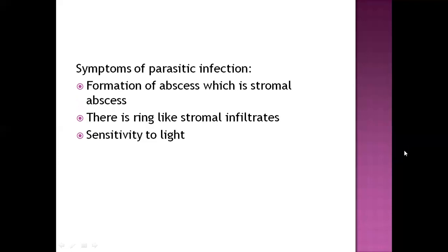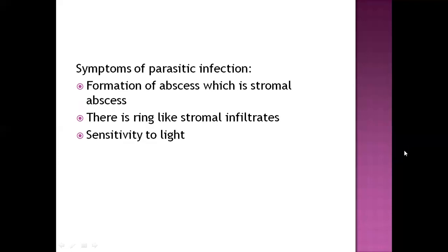Symptoms of parasitic keratitis: first, formation of a stromal abscess — stroma means tissue, so the abscess is produced from stromal tissue of the eye. Next, ring-like stromal infiltrates are formed in the anterior part of the eye — a ring-like structure formed by tissue infiltrates. Next is sensitivity to light when the patient is exposed to light.